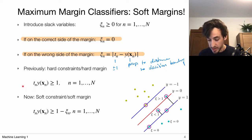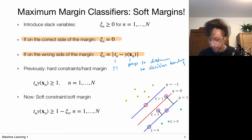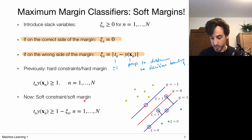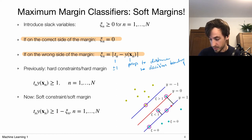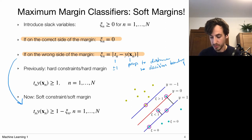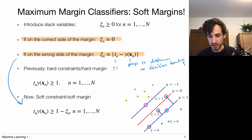Previously we had the hard constraint that t_n times y_n was always greater than or equal to one, meaning every point had to lie on the correct side of the margin. Now we have soft constraints, or soft margins, meaning we sort of shift the allowed boundary for each data point based on its penalty ψ_n. So for each data point we work with a soft constraint that allows us to move this boundary depending on that penalty.